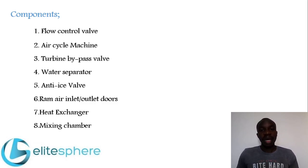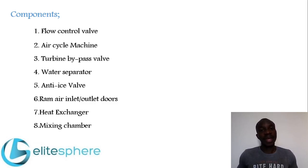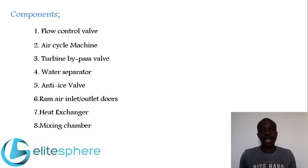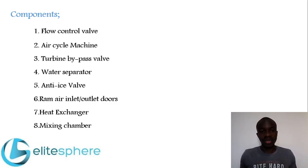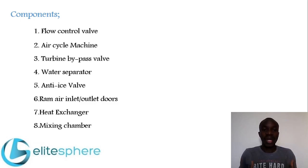The next component is the turbine bypass valve. On some aircraft, such as the Airbus A320, it is called a trim air valve. The function of the turbine bypass valve or trim air valve is to bypass some hot air before it goes into the turbine. This bypassed air will later be mixed with the cold air to adjust the temperature to the desired level for the cabin.